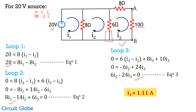We have shown only the value of I3 here because we need the current flowing through the 10-ohm resistance. You can find I1 and I2 as well, but they are not needed here. So for the 20-volt source, the current through the 10-ohm resistance is 1.11 amperes.